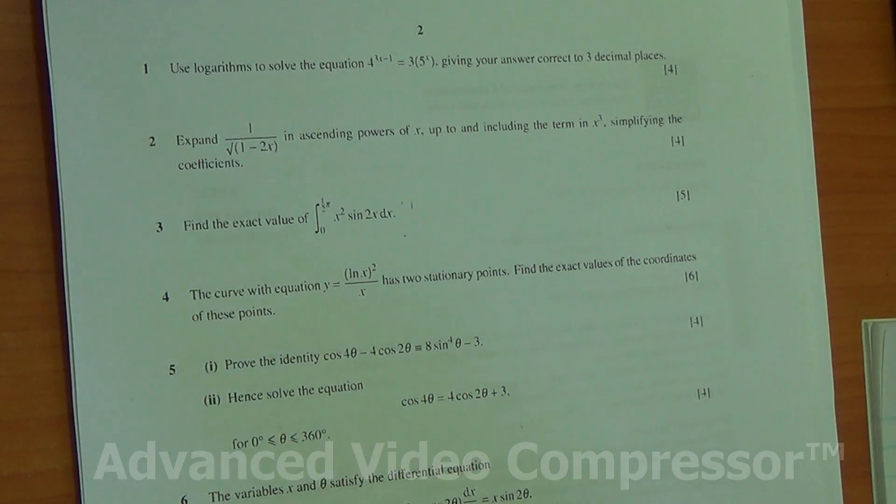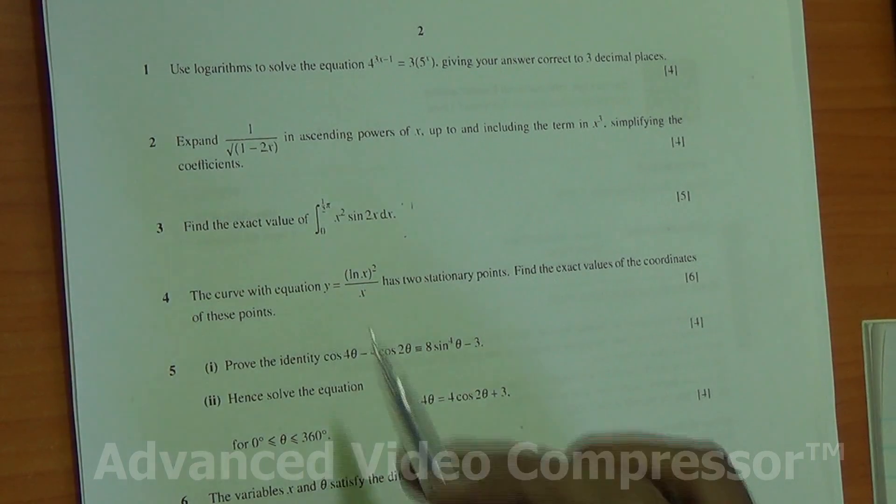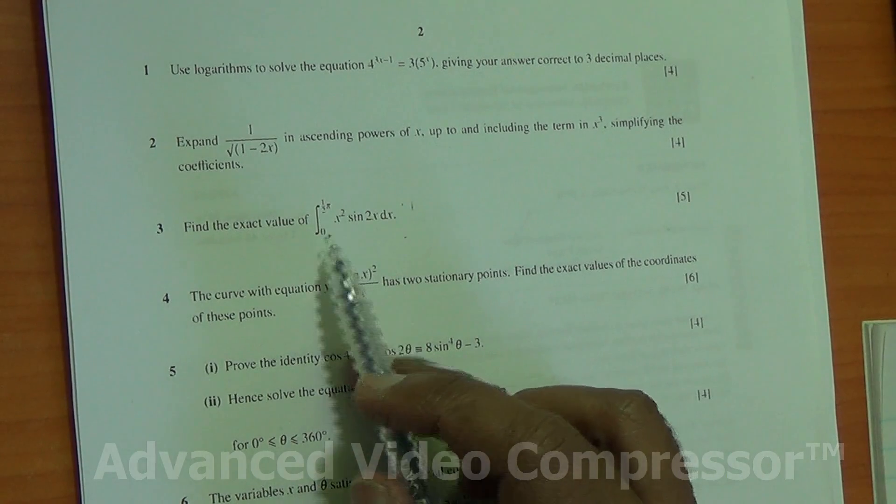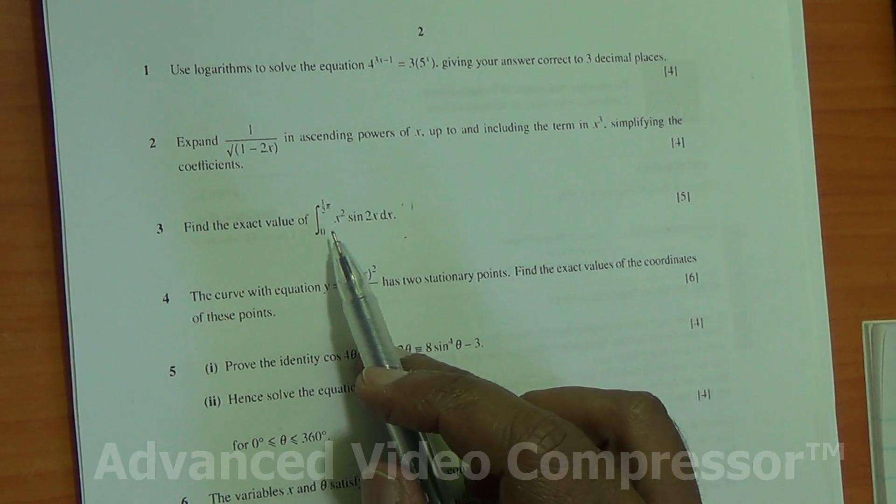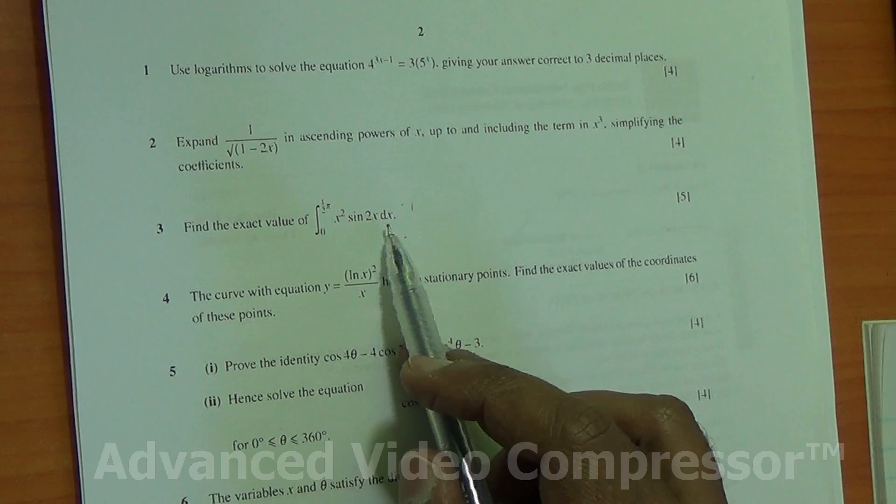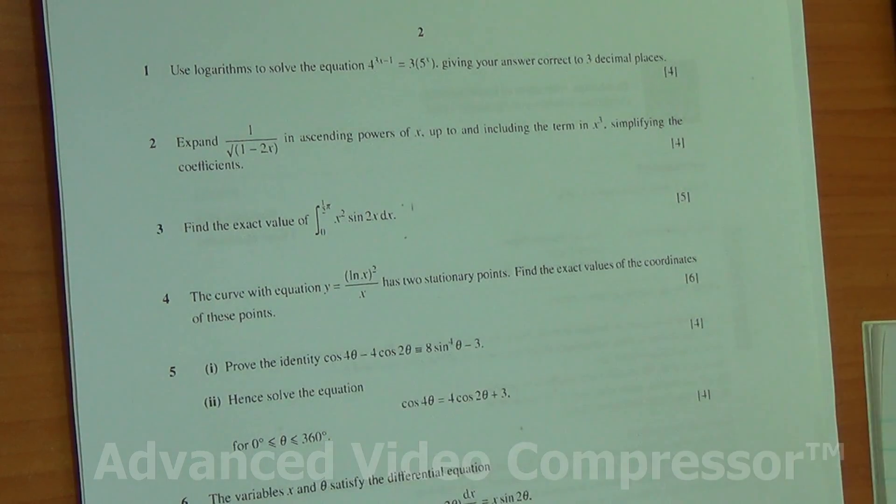Hi, question number 3, taken from June 2016, advanced level maths HSEP3. Find the exact value of the integral of x squared sine of 2x dx, with limits from 0 to half pi.